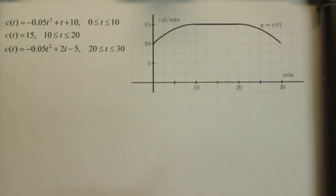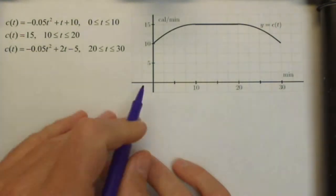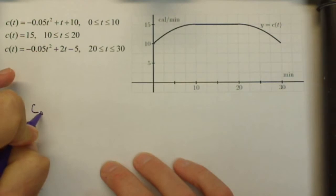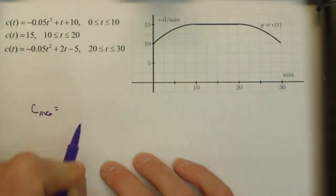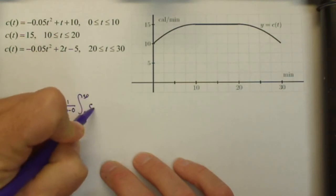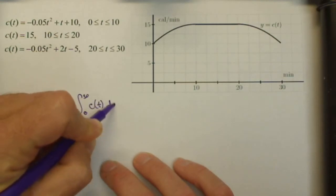Part C asks us to calculate the exact average rate that we burnt calories during this 30 minute period. So we're gonna calculate the average value on zero to 30, which as we know from our definition of average value, is one over our interval, 30 minus zero, times the integral from zero to 30 of C of T, DT.